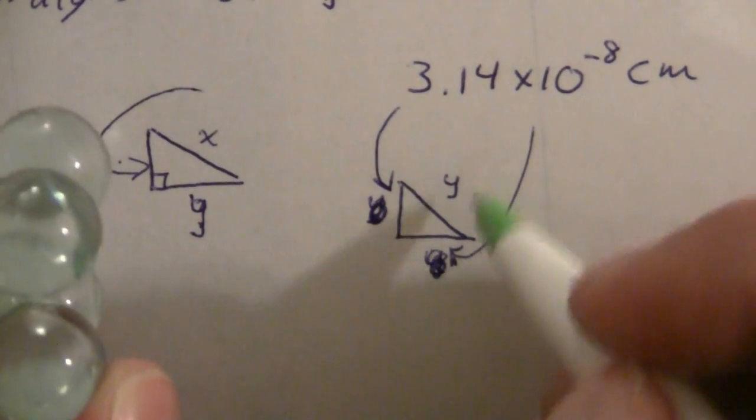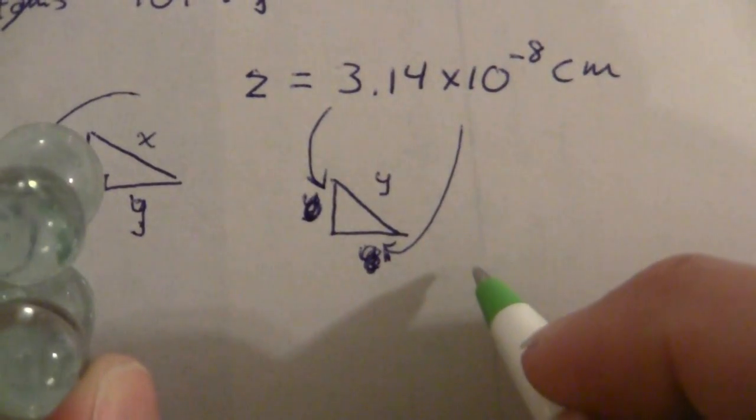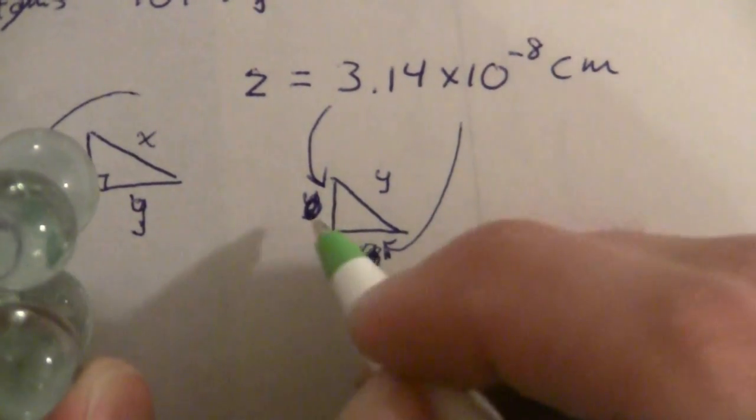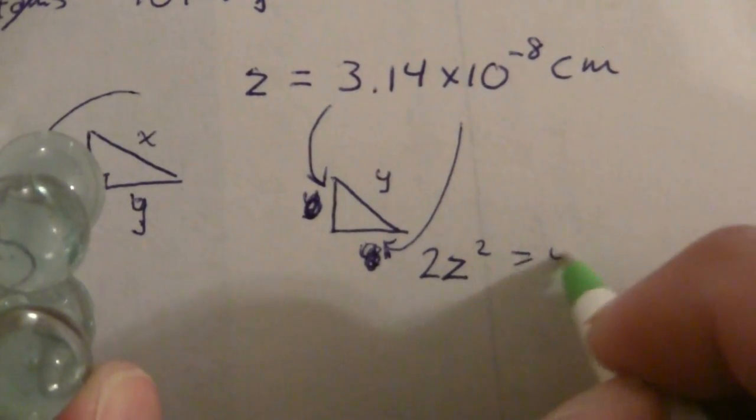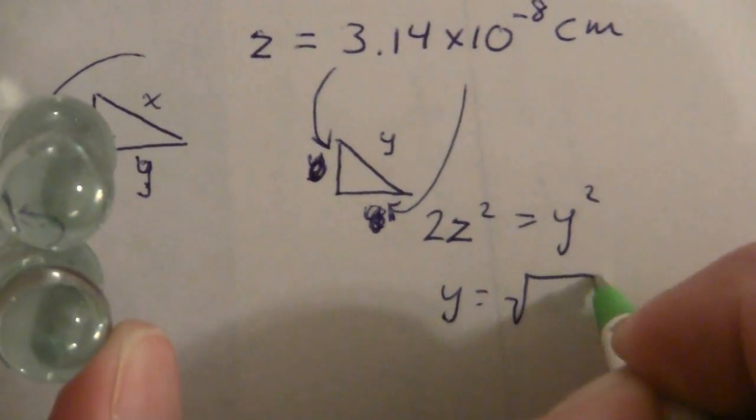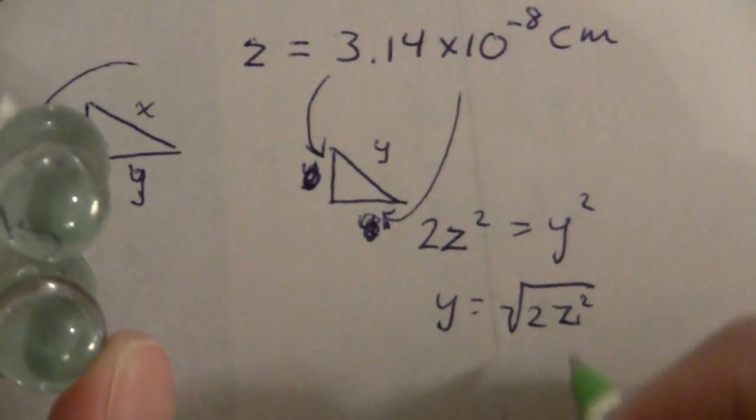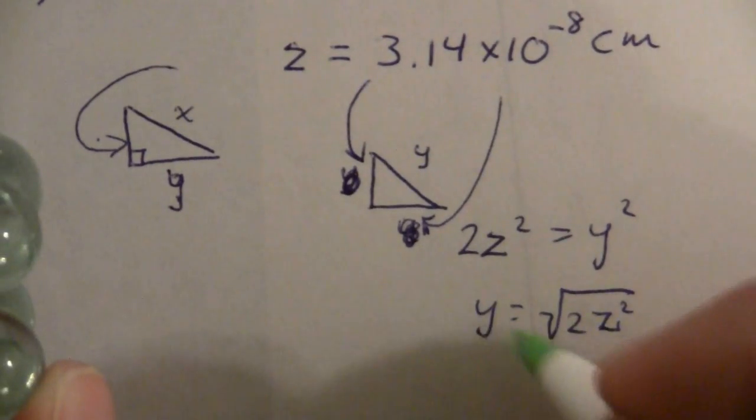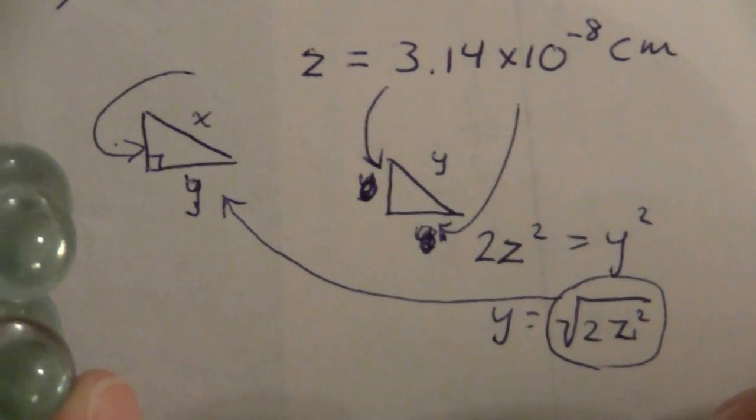And so what I'm going to do is take this value squared, let me call this z, so that I can write it algebraically. z squared plus z squared or 2z squared equals y squared. So y is the square root of 2z squared. And that is what I can use for there.